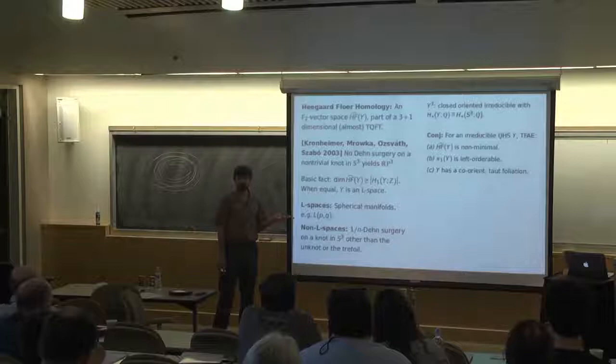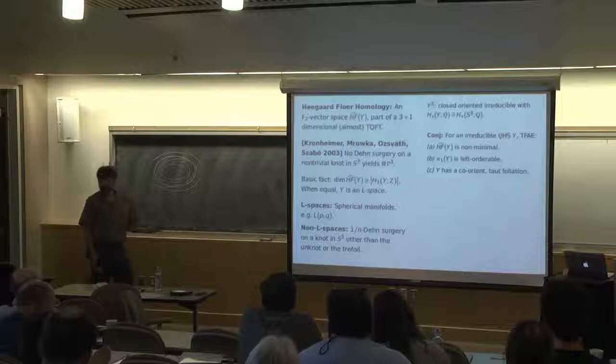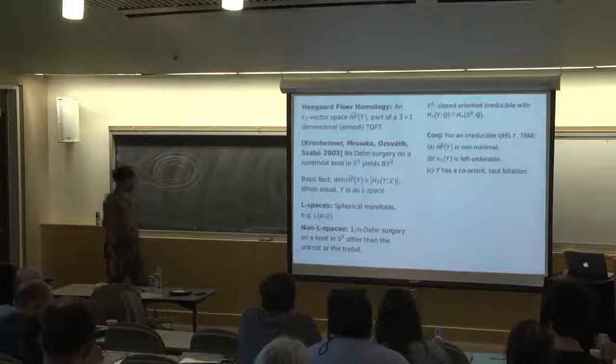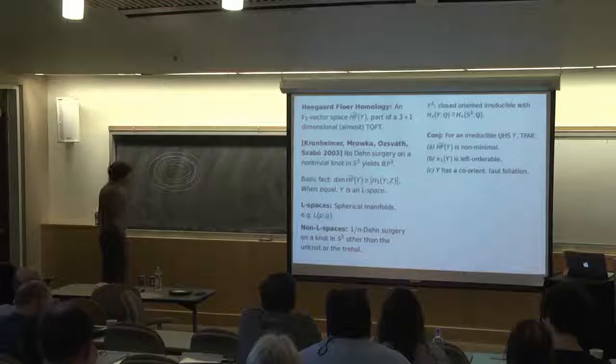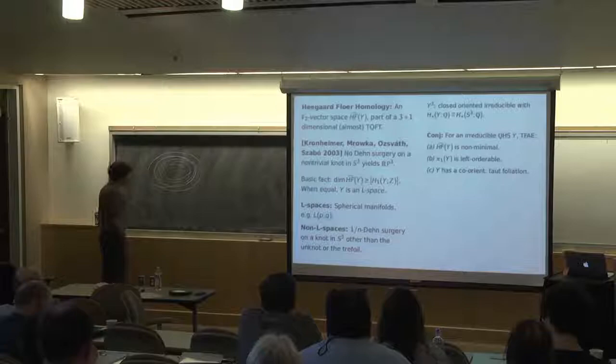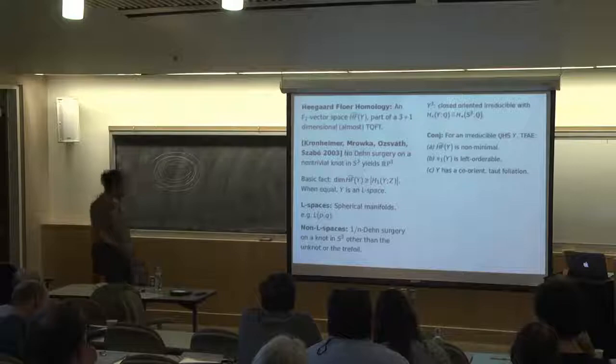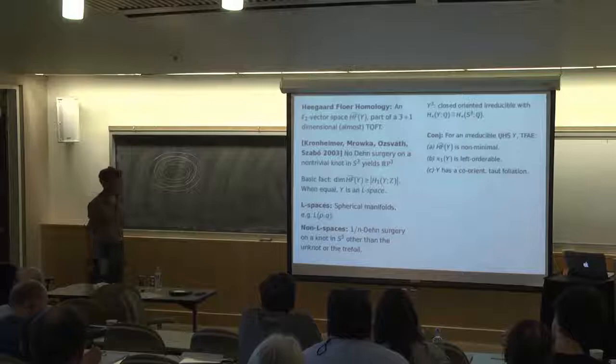Examples of L-spaces: any manifold with a spherical geometry. In particular, a lens space is an L-space, and that's from whence they get their name. Some examples of non-L-spaces: if I do 1/N Dehn surgery — going around once this way and many times around this way — then if you do that on any knot in the three-sphere other than the unknot or the trefoil, you get one of these non-L-spaces.